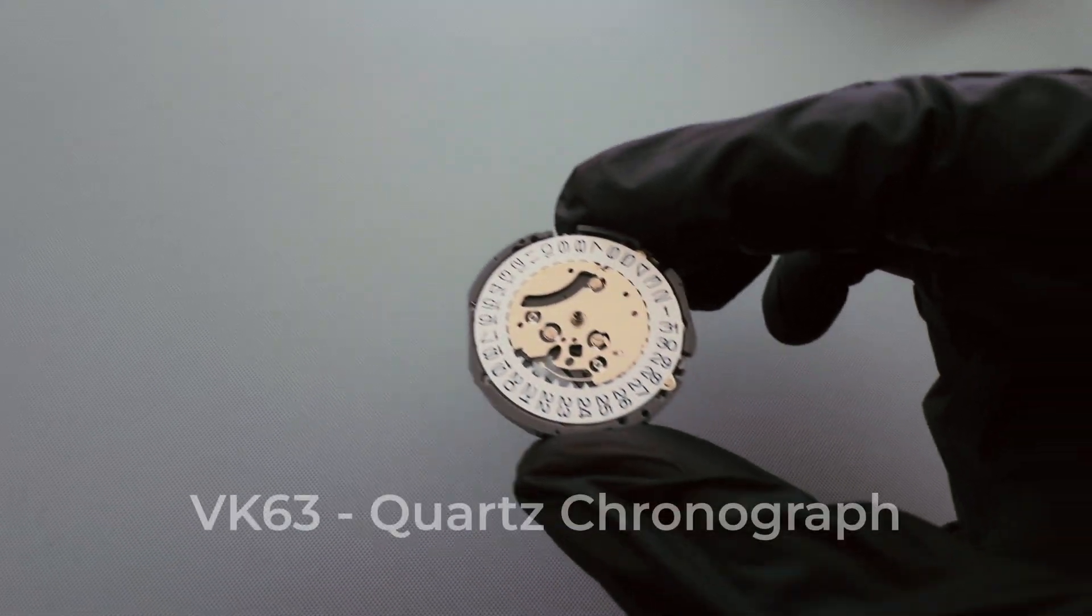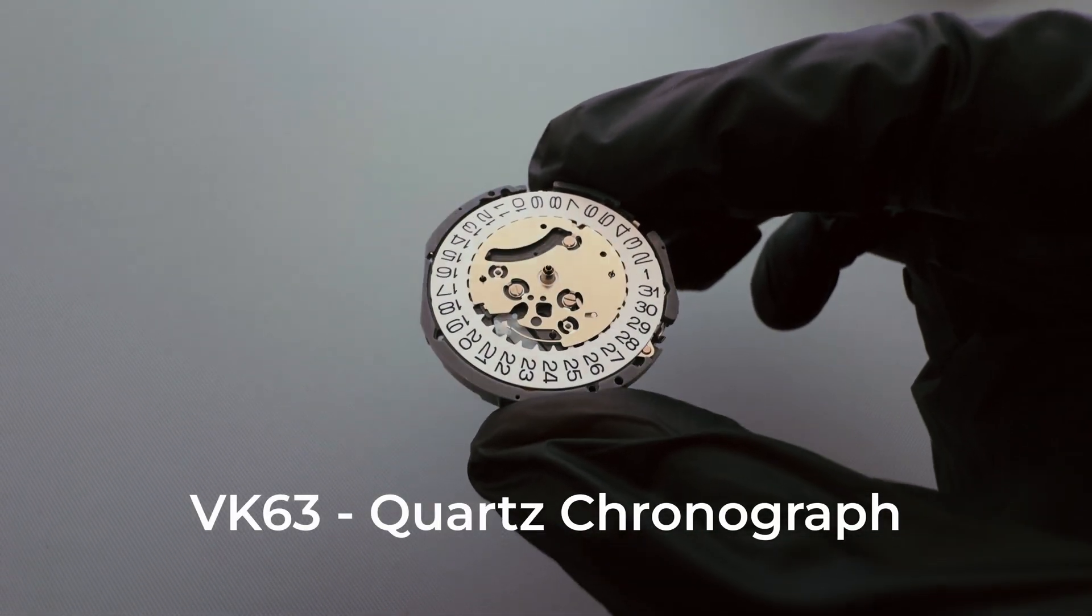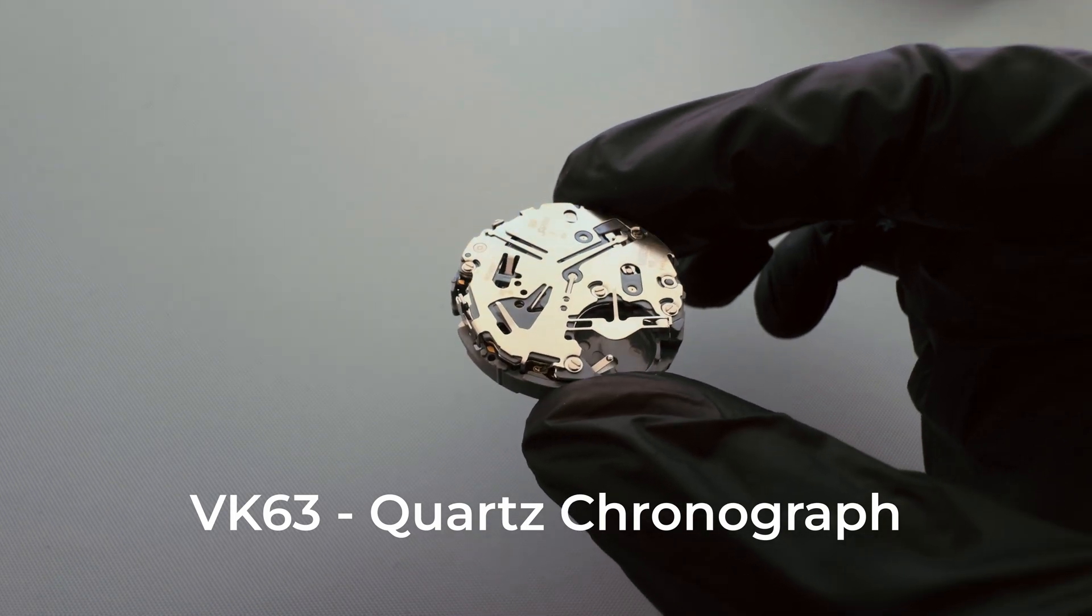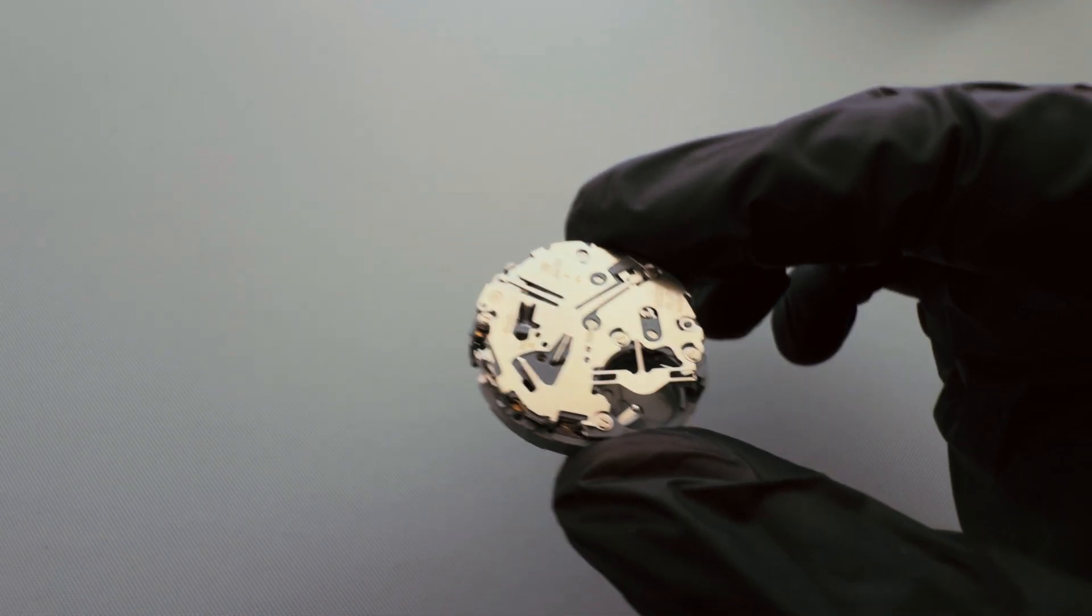Want something different? VK63, quartz chronograph. Battery powered, approximately three years life. Accuracy, plus or minus 20 seconds per month.